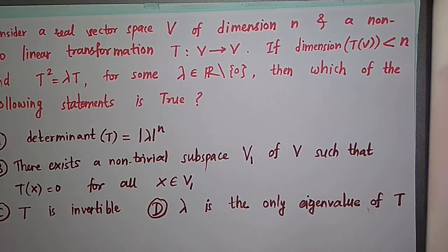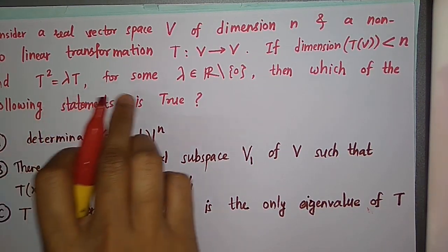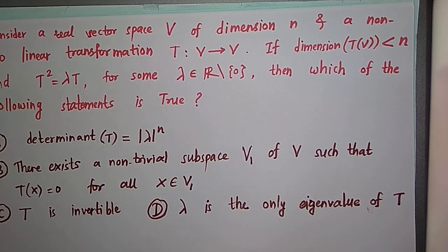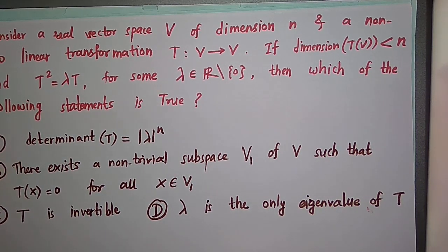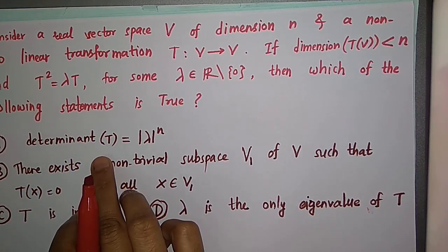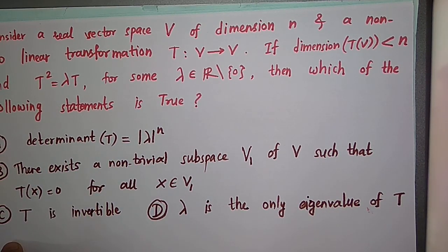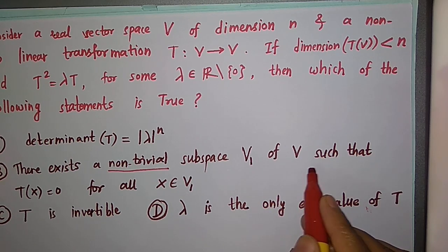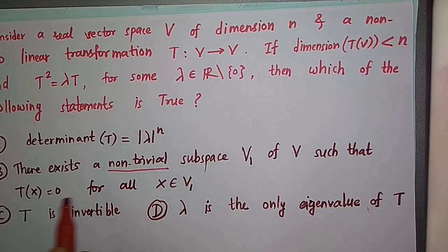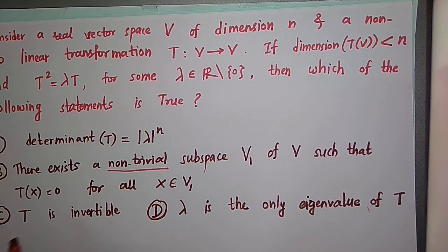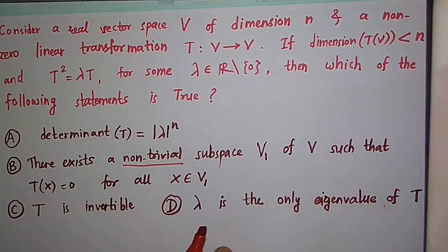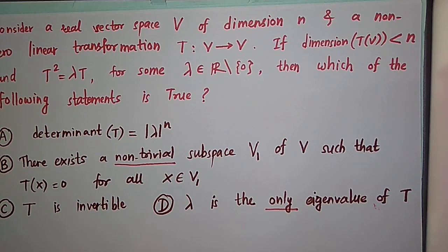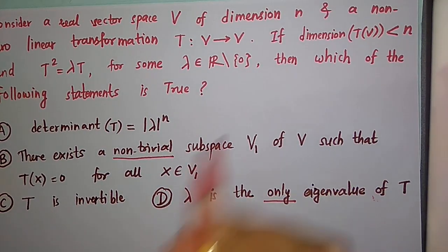So rank of T is less than n. Also given that T squared equals lambda T for some lambda belonging to the real numbers, and lambda is non-zero. The statements to evaluate are: A) det(T) equals |lambda|^n; B) there exists a non-trivial subspace V1 of V such that T(x) = 0 for all x in V1; C) T is invertible; D) lambda is the only eigenvalue of T.